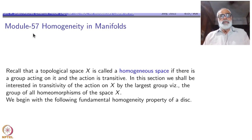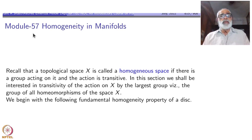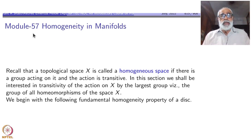You might have come across the word homogeneous in a different context, like group action on a set or on a space. A topological space is called a homogeneous space if there is a group acting on it and the action is transitive.